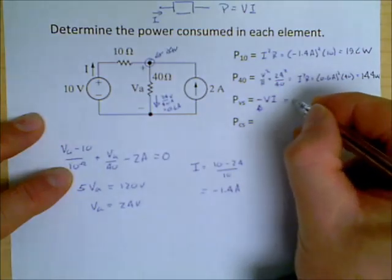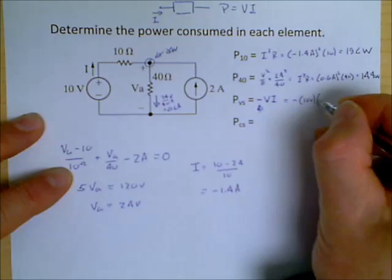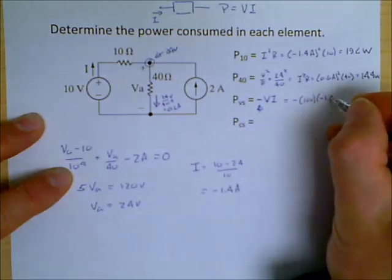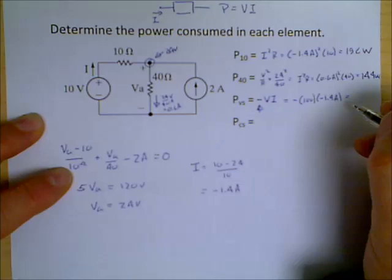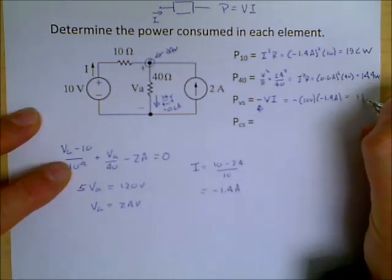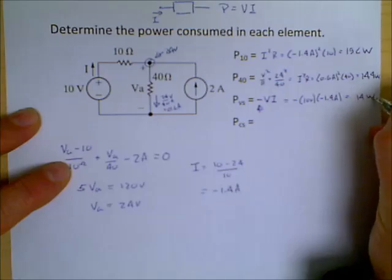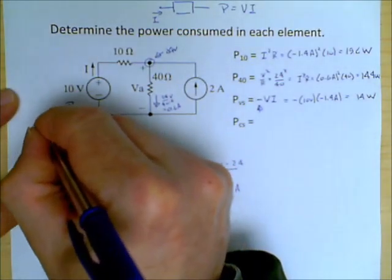And so therefore this becomes minus. The voltage is 10 volts. The current is minus 1.4 amps. And so therefore the power that is consumed in the 10 volt source works out to be 14 watts. And so therefore this source is consuming power.